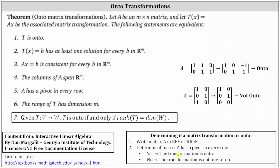To determine whether a matrix transformation is onto, we write the transformation matrix in row echelon or reduced row echelon form and check if there is a pivot in every row. If yes, the transformation is onto; if no, it is not onto. For the first matrix A, in reduced row echelon form there is a pivot in row one and row two — pivots in every row — so it represents an onto transformation. For the second matrix A, there are pivots in rows one and two but no pivot in row three, so that transformation is not onto.